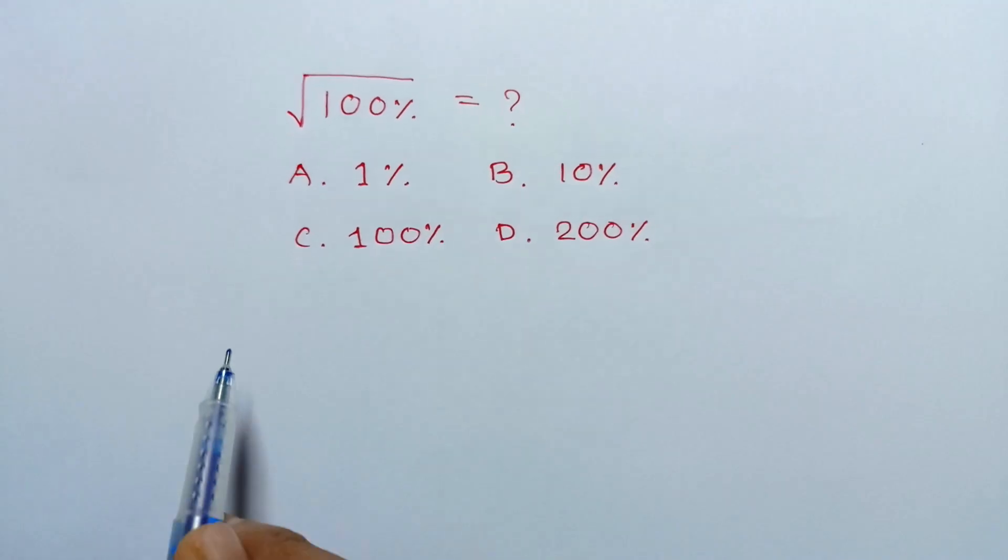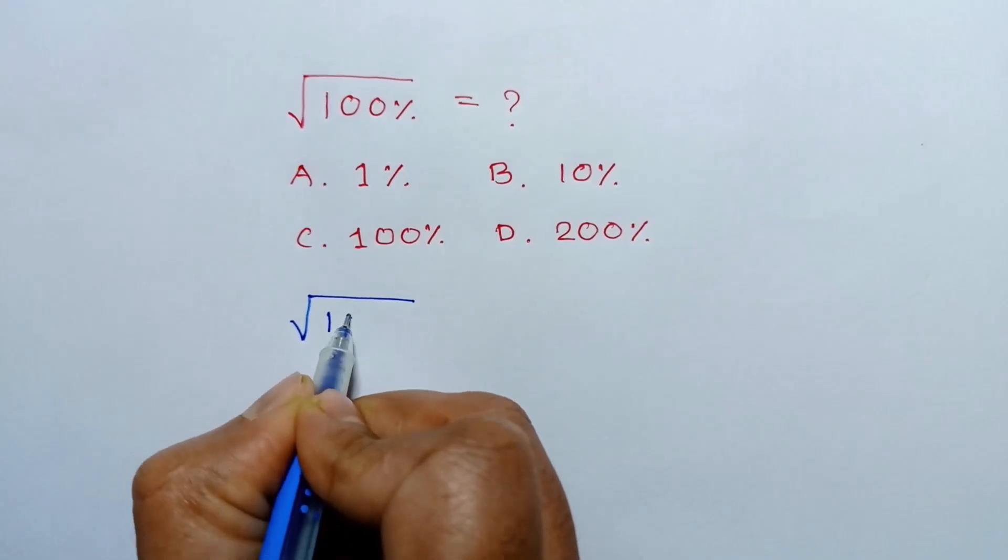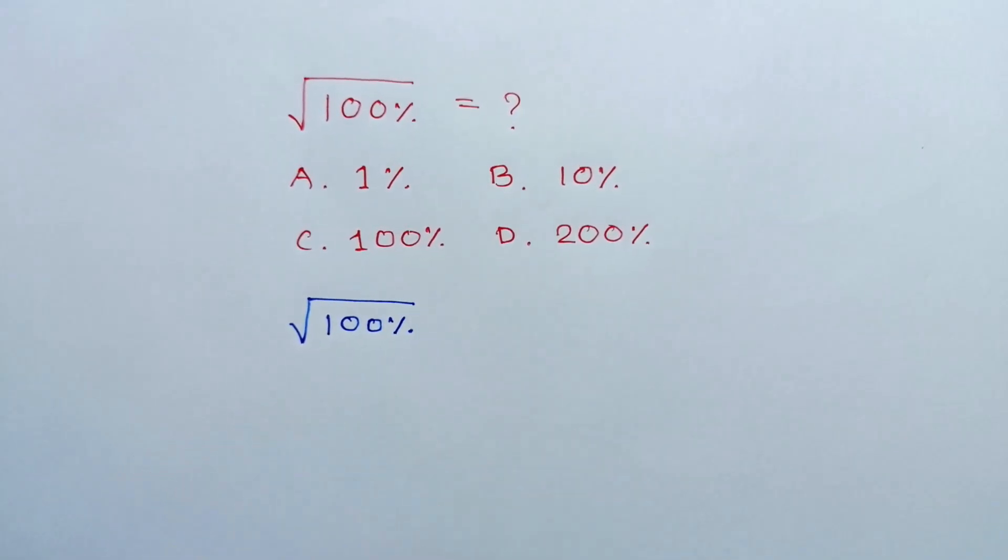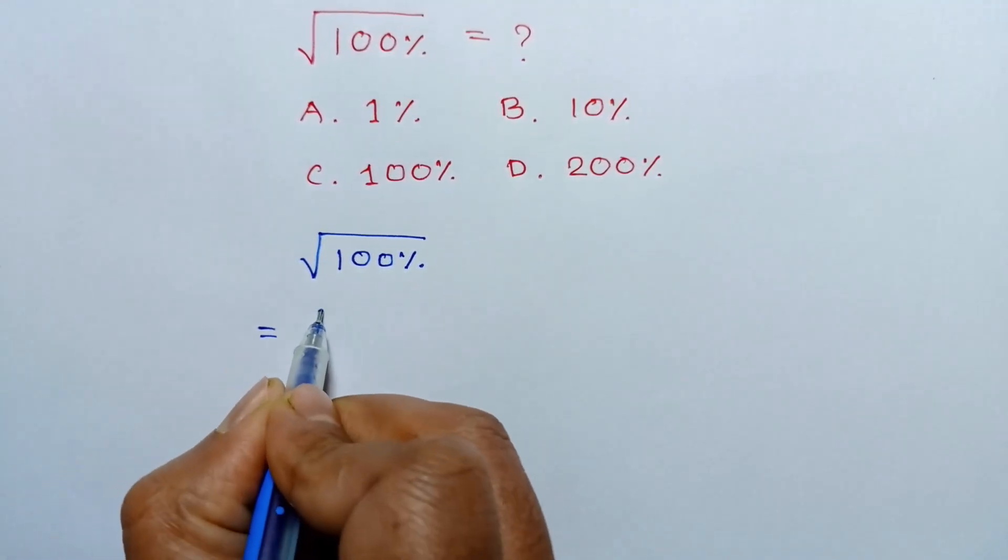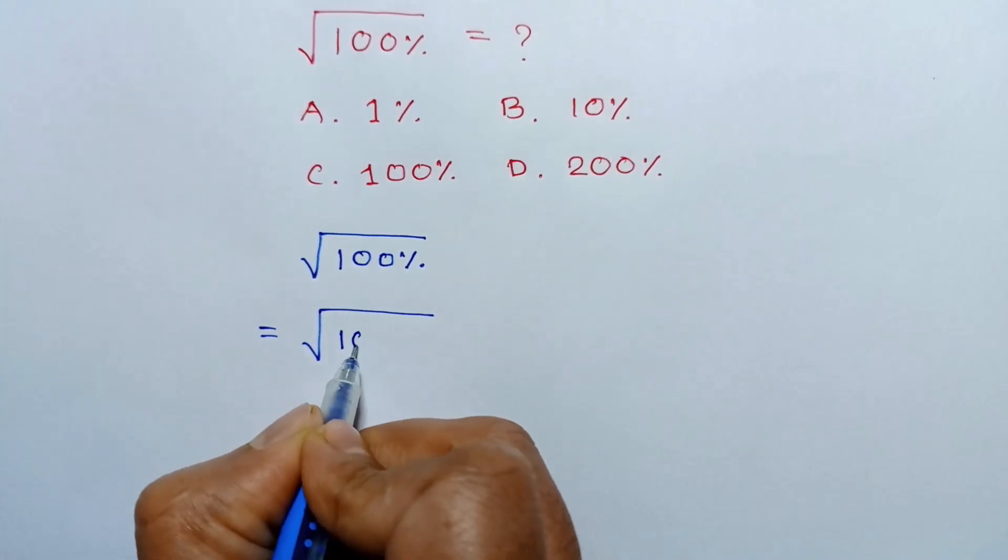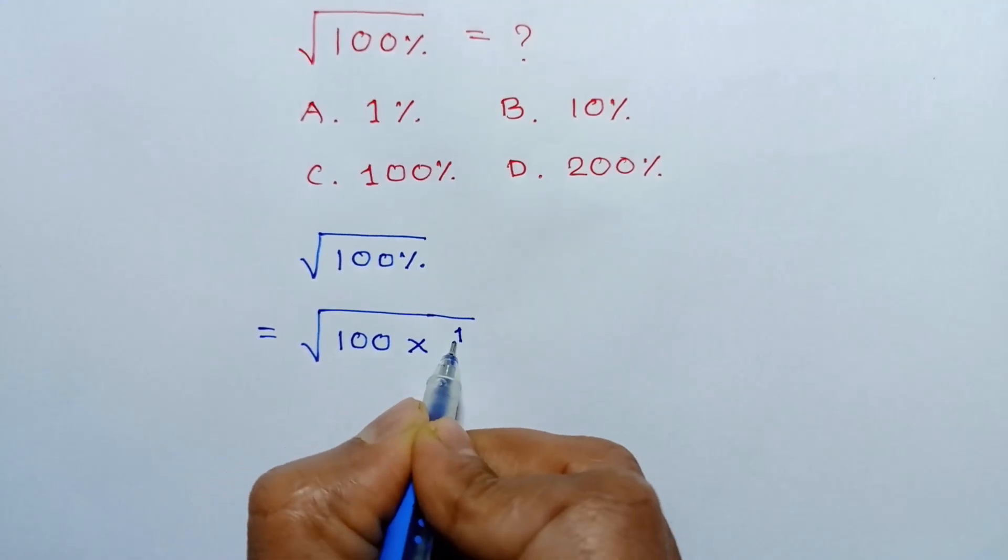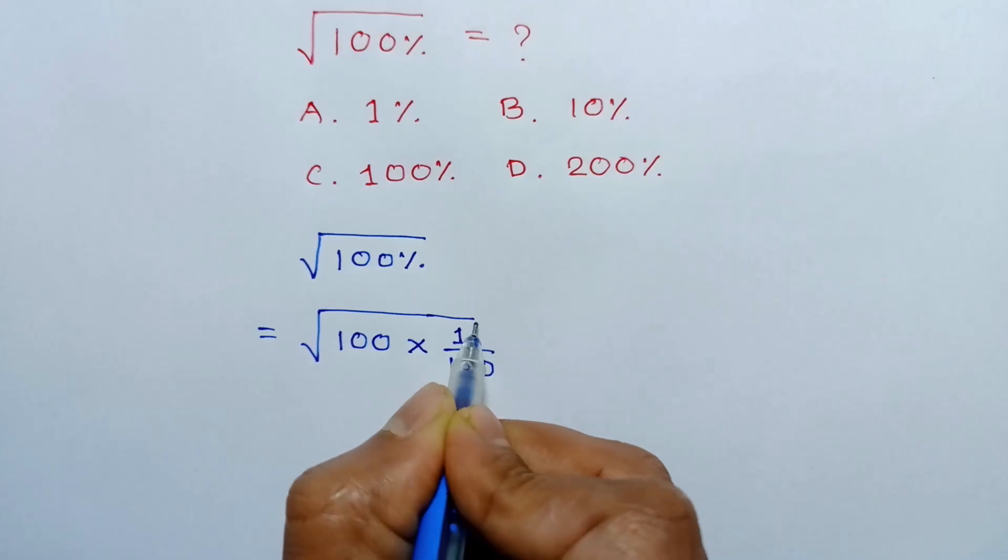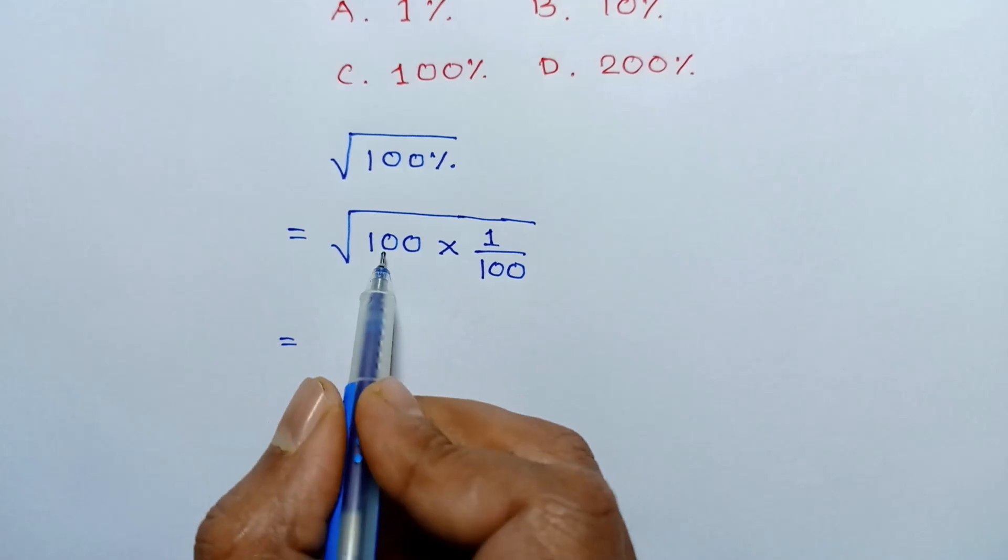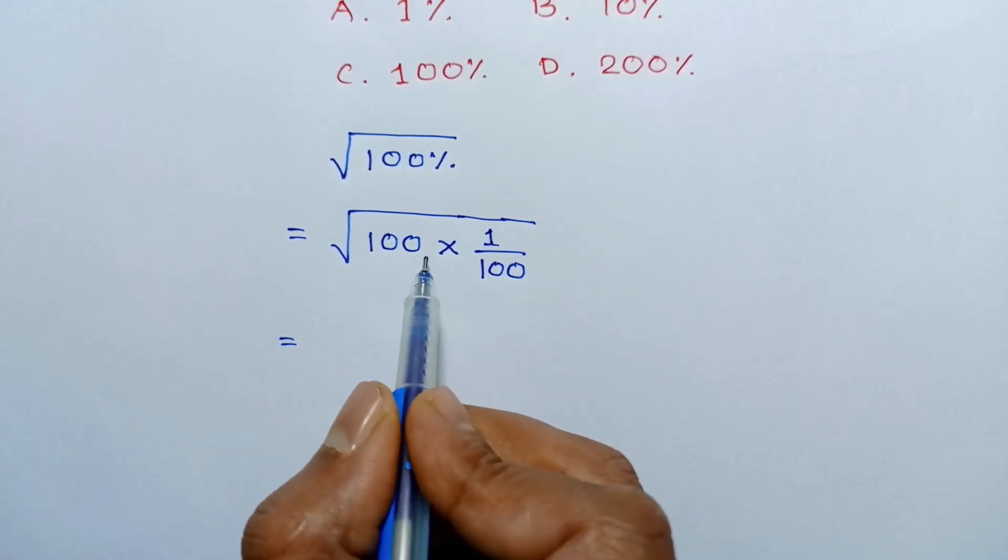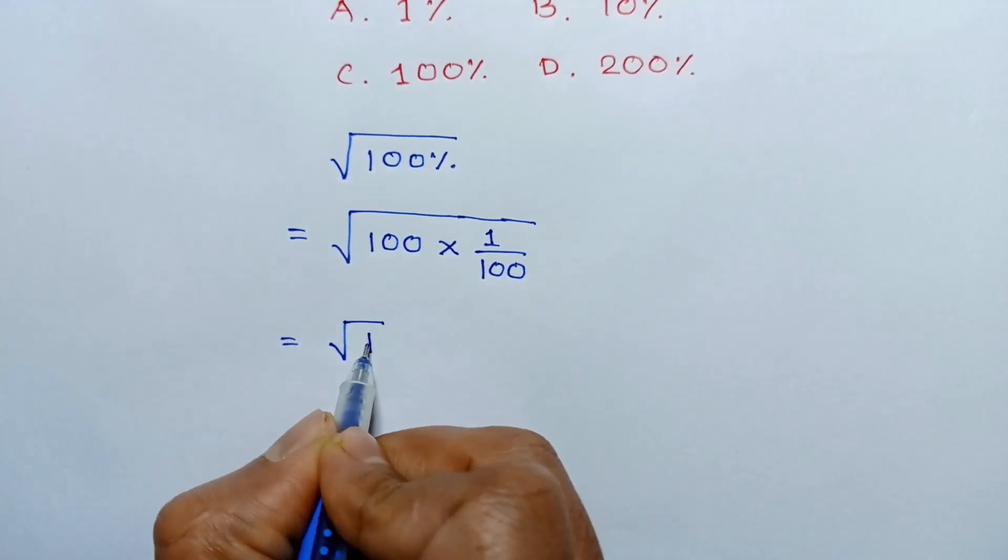We have given square root of 100%. This equals the square root of 100 times 1 over 100. The 100 and 100 will cancel out, so it will remain 1, so it will be square root of 1.